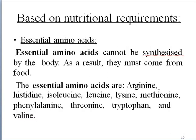Based on nutritional requirements, amino acids are divided into two types: essential and non-essential. Essential amino acids cannot be synthesized in the body but can be supplemented from food. Examples include arginine, histidine, isoleucine, and leucine.